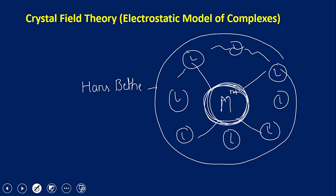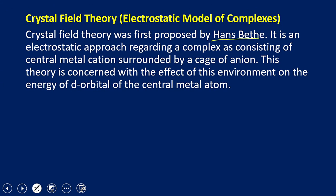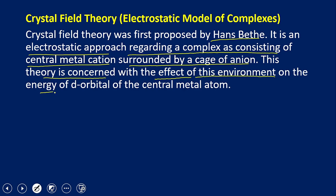This theory is mainly concerned with the effect of the environment of these ligands on the d orbitals of the metal complex. It deals with the splitting of degenerate d orbitals into eg and t2g orbitals. This theory was proposed by Hans Bethe and is an electrostatic approach, regarding a complex as consisting of a central metal cation surrounded by a cage of anions.